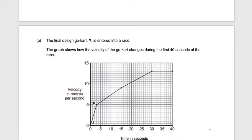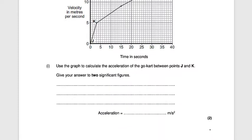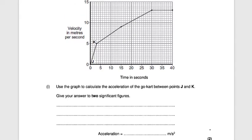Next question: the final design go-car Y is entered into a race. The graph shows how the velocity of the go-car changes during the first 40 seconds of the race. Use the graph to calculate the acceleration of the go-car between points J and K, giving your answer to two significant figures. We need to work out the gradient of the graph — acceleration is change in velocity divided by time.